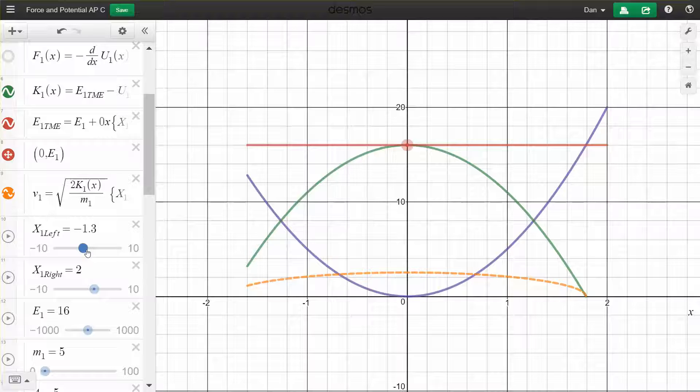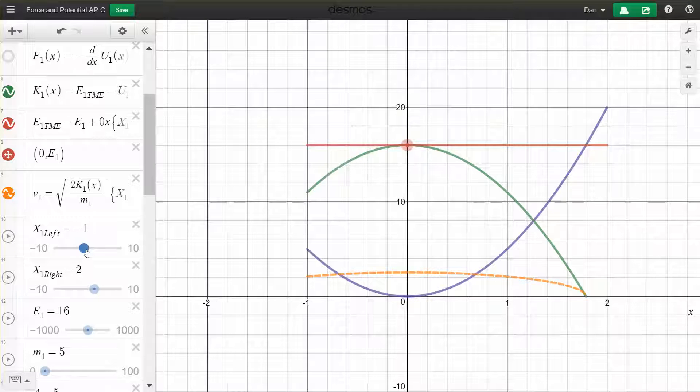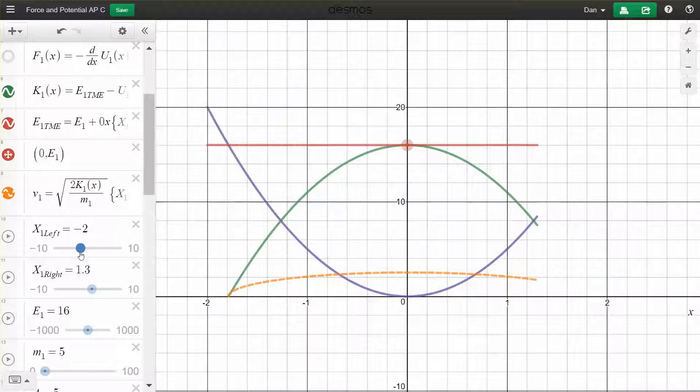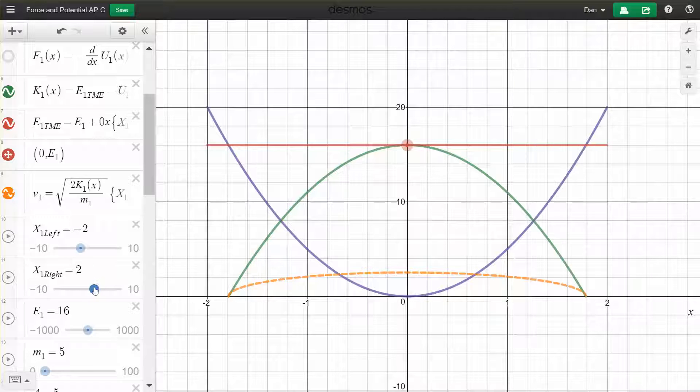So x1 left, x2 left is just controlling the range over which you want to look. So I'll keep that, minus 2 plus 2, I guess the math term would be domain now that I think about it.